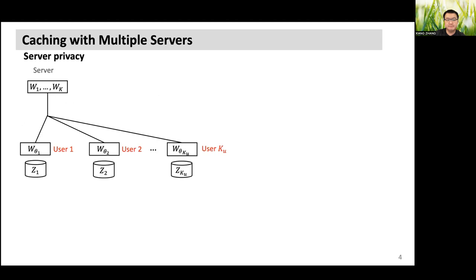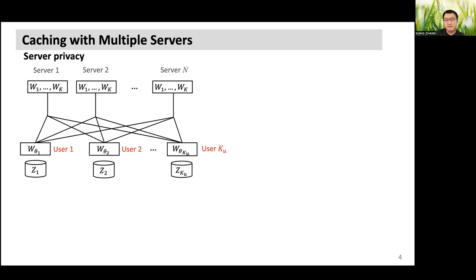For caching with multiple servers, people who are familiar with coded caching should recognize this architecture. In this architecture, there's one server that has access to a file library consisting of k different files, denoted by w1 until wk. This server is connected to a bunch of users; specifically, the number of users is equal to k_u. Each user has a cache memory denoted by z. In this work, different from coded caching, we incorporate multiple users and multiple servers — the number of servers equals n here.